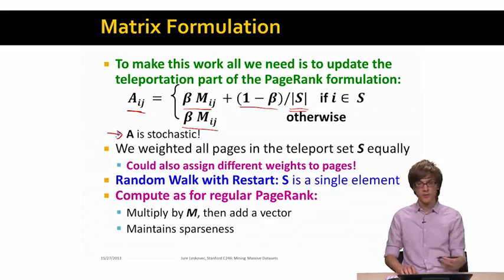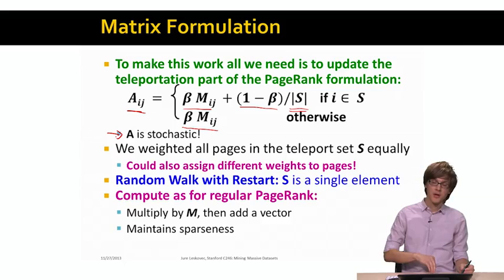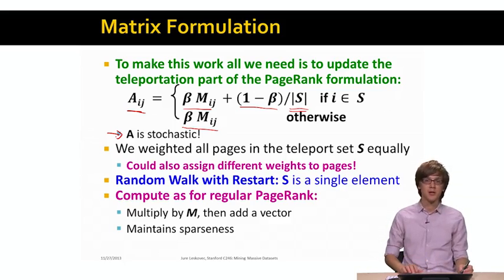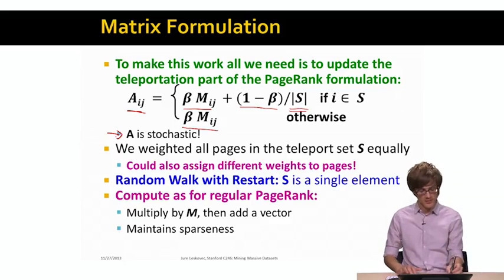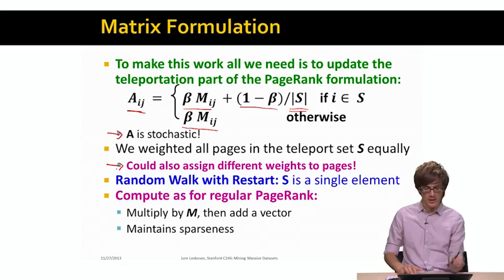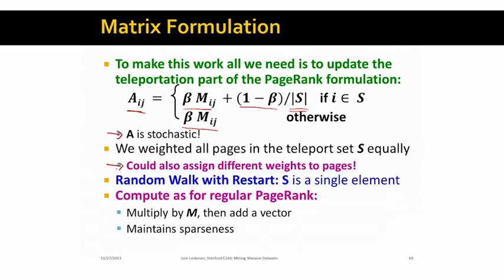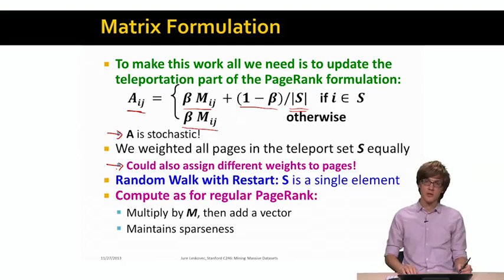Here we are assuming that when a random walker jumps into the teleport set, they jump uniformly at random to any of the pages in the teleport set. We could make things even more interesting by assigning a probability distribution so every page has a different weight. We have lots of freedom in how we set the teleport set S. For example, when teleport set S is just a single node, this is called a random walk with restarts.